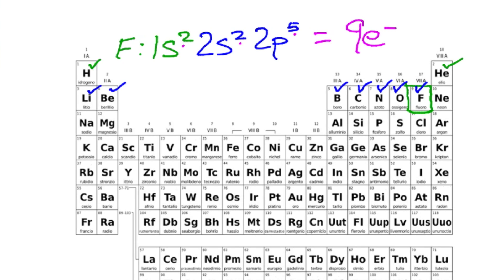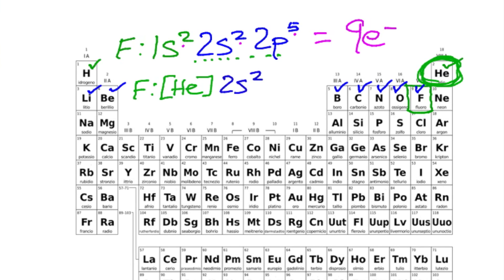Now let's do valence electron configuration, which shows only the valence electrons. We start the same way by writing the chemical symbol with a colon, then go to the previous period's noble gas, which is helium, and write that noble gas in a bracket. Then all we have to do is write the highest energy level electrons: 2s2 and 2p5. That's valence electron configuration — 2 plus 5 equals 7 valence electrons.